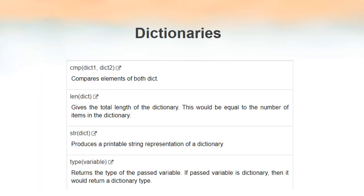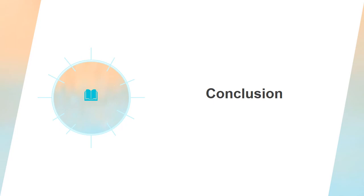Now we will see some of the built-in dictionary functions. The cmp() function is used to compare two dictionaries. The len() function returns the total number of key-value pairs inside the dictionary — each pair is counted as one item. The str() method gives the string representation of a dictionary, and the type() method returns the type of the dictionary.